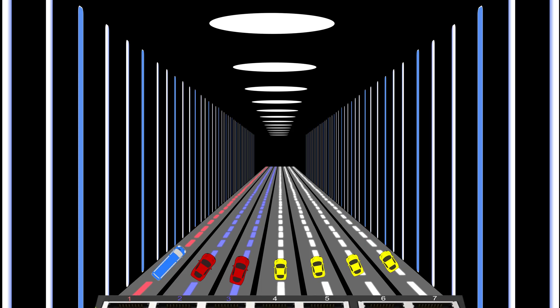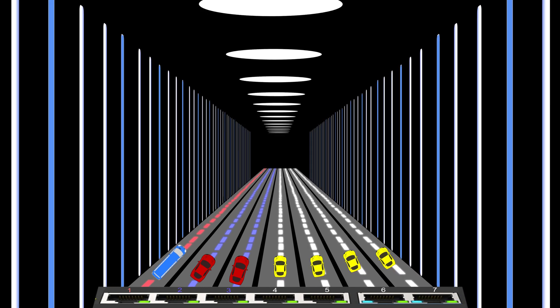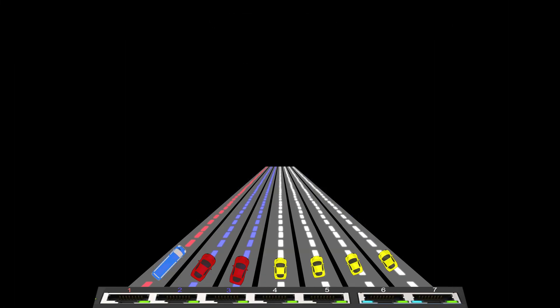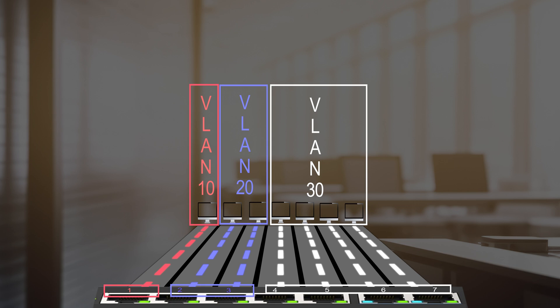Imagine a giant switch at the beginning of the road where each lane originates from a designated switch port. Each lane is in fact an Ethernet cable being part of a VLAN. The first lane belongs to the bus VLAN, the second and third lanes are dedicated to the carpool VLAN, and the remaining lanes are reserved for regular cars — a regular car VLAN. Each car on these lanes symbolizes an Ethernet frame carrying data, unable to access the next lane unless it's part of that VLAN.